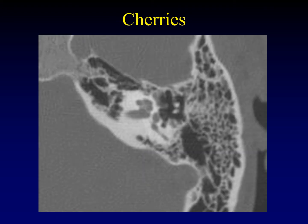If we continue up another cut, we find ourselves leaving the basal turn of the cochlea behind. Now all we're seeing are the upper turns of the cochlea with the bony scala separating them, and this has been likened to a bunch of cherries.